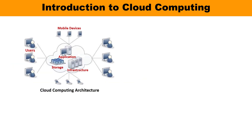Now let us discuss cloud computing architecture. The cloud consists of storage, infrastructure, and applications, and from this cloud, millions and billions of users may be connected via various mobile devices, desktops, laptops, and other devices. Cloud computing is different from traditional computing — no user has to handle anything. There will be a cloud vendor who is responsible for the purchase and maintenance of all hardware and software. Cloud computing services can be charged depending upon usage.